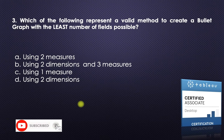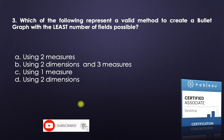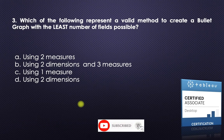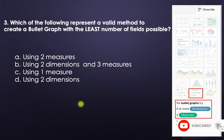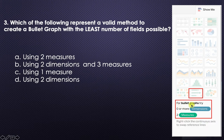Next question: which of the following represents a valid method to create a bullet graph with the least number of fields possible? If you go to Show Me and click on bullet graphs, you can clearly see the option: try zero or more dimensions and two measures. So the minimum requirement is two measures, making option A — using two measures — the answer.